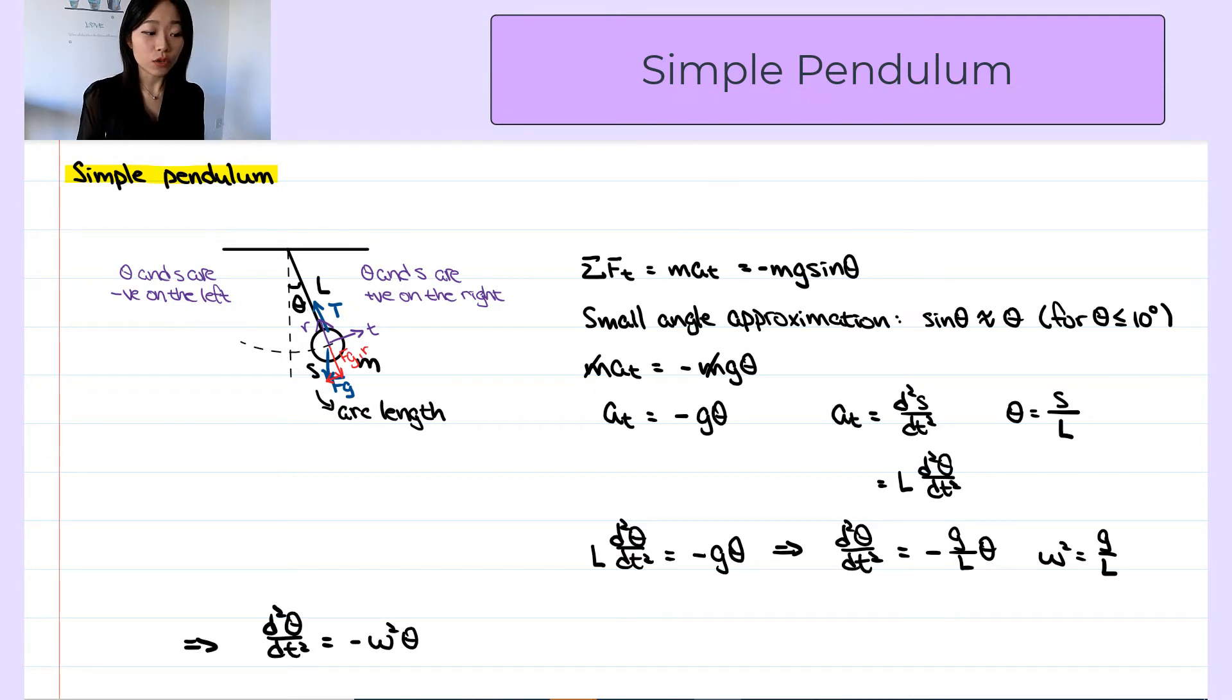And we already found the solution for this differential equation. So now we can write theta as a function of time. It would be maximum theta or the amplitude times cosine of omega times time plus the phase constant phi. But here the omega would be square root of g over l.